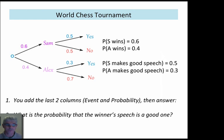And then, what I want you to do with this one is fill in the last two columns. That's the event. So, the first event would be Sam and Yes. So, Sam giving a good speech. Then, Sam and No. Then, Alex and Yes. Alex and No. And, work out the probabilities for those four events. And, then answer the final question there, number two. What is the probability that the winner's speech is a good one?